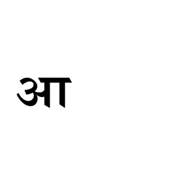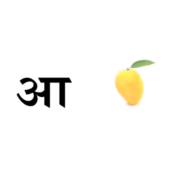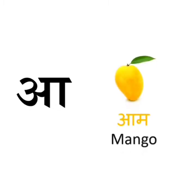A says aloo — aaloo means potato. Potato is a vegetable. It is brown in color. A says aam — aam means mango. Mango is a fruit. It is yellow in color. It is sweet to taste, and it is the king of fruits.